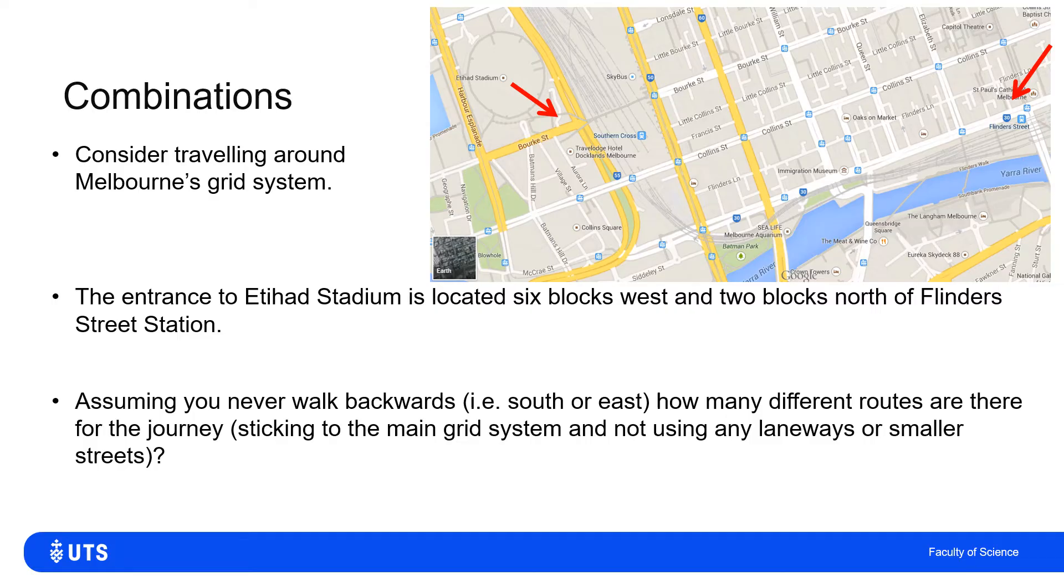So if we wish to never go backwards, so we know we need to go north and we need to go west. Let's assume that the only times that we walk a block is either walking one block west or walking one block north. So there's no reason ever to go backwards, walk east or south further away. How many different ways could I get from Flinders Street Station to the entrance to Etihad Stadium?